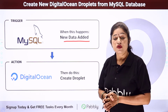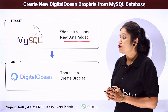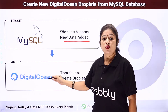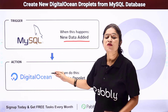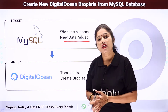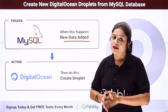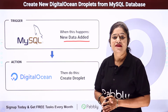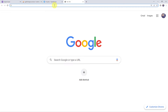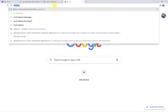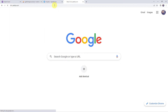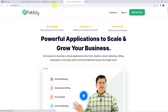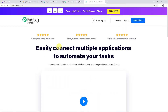To integrate MySQL with DigitalOcean, we are going to use Pabbly Connect. To set up this automation, come to your browser and type pabbly.com. This is the website of Pabbly. Go to Products and click on Pabbly Connect.